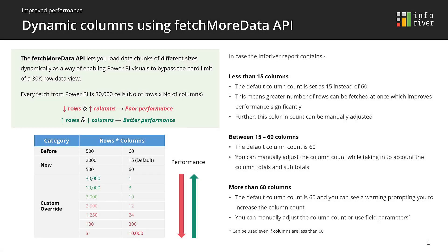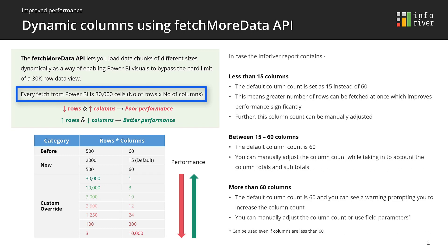For any visual in Power BI, a single fetch from the VertiPack engine returns up to a maximum of 30,000 cells to the visual. For a matrix type visual, it's the multiplication of the number of rows times the number of columns, and this includes column subtotals and grand totals.